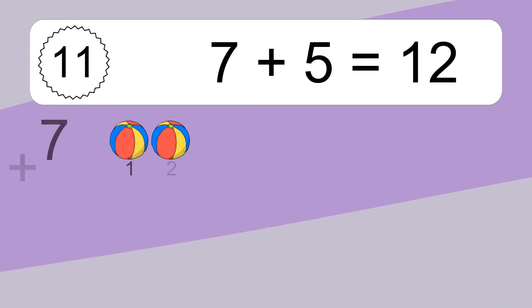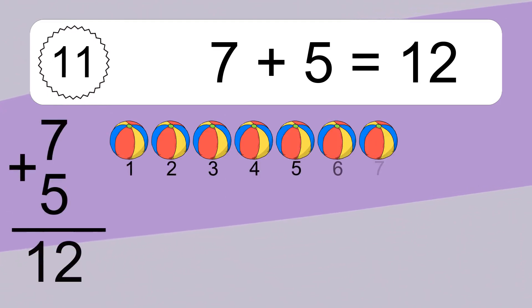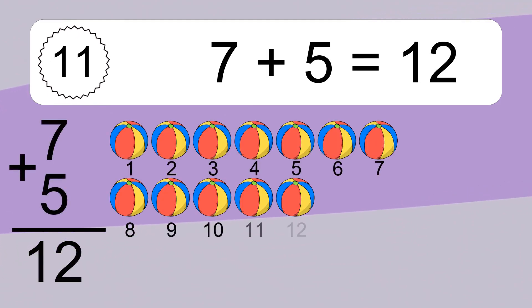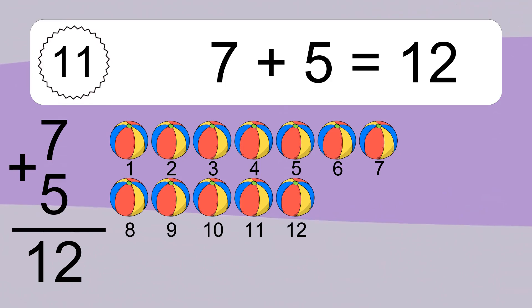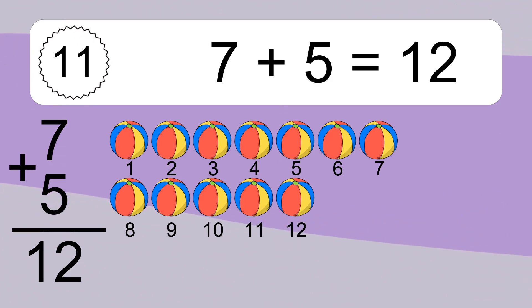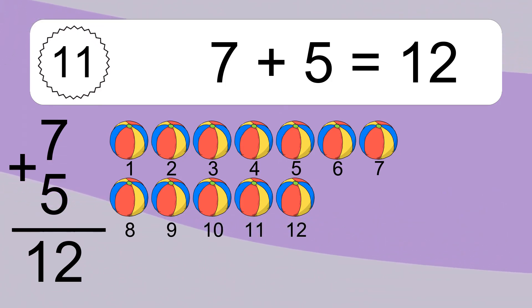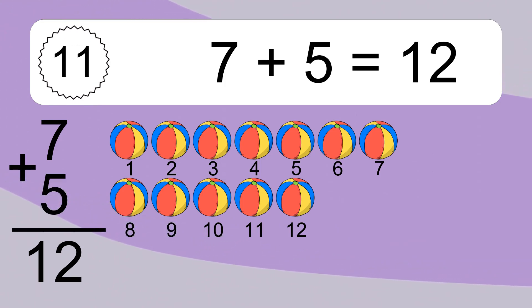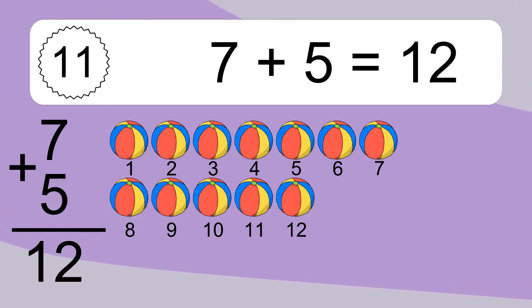7 plus 5 equals what? 7 plus 5 equals 12. Let's count it. 1, 2, 3, 4, 5, 6, 7, 8, 9, 10, 11, 12.